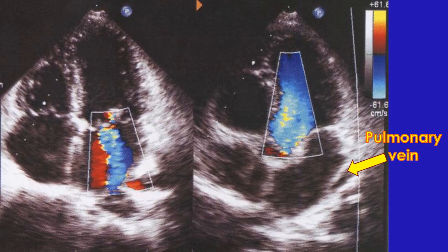Pulmonary veins can be seen joining the left atrium. Usually only three pulmonary veins are imaged in the adult. Pulmonary veins will not be seen joining the left atrium in cases of total anomalous pulmonary venous drainage. Sometimes only one or two may join the right atrium in partial anomalous pulmonary venous drainage.